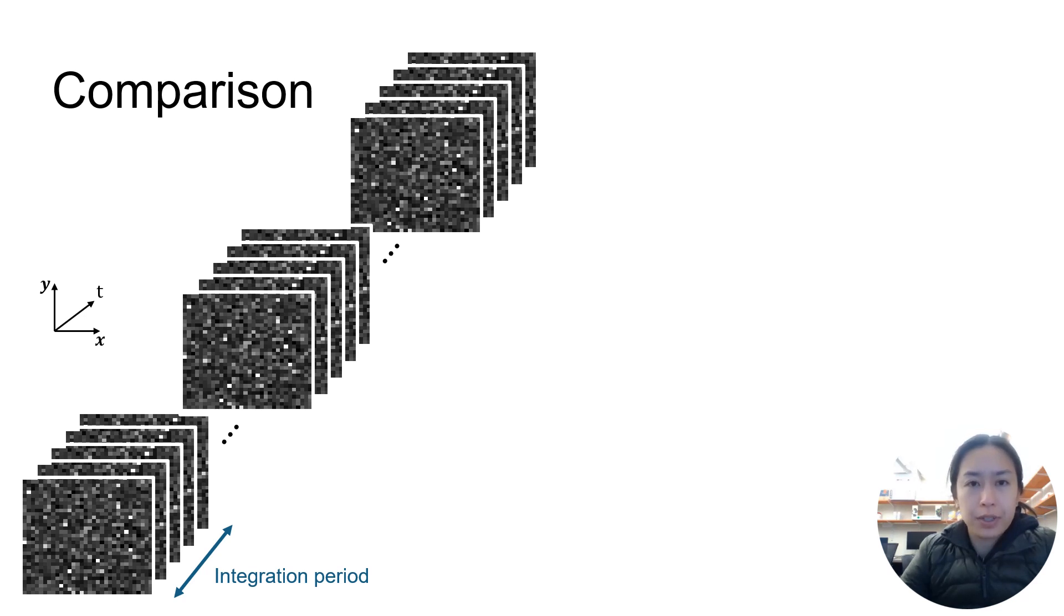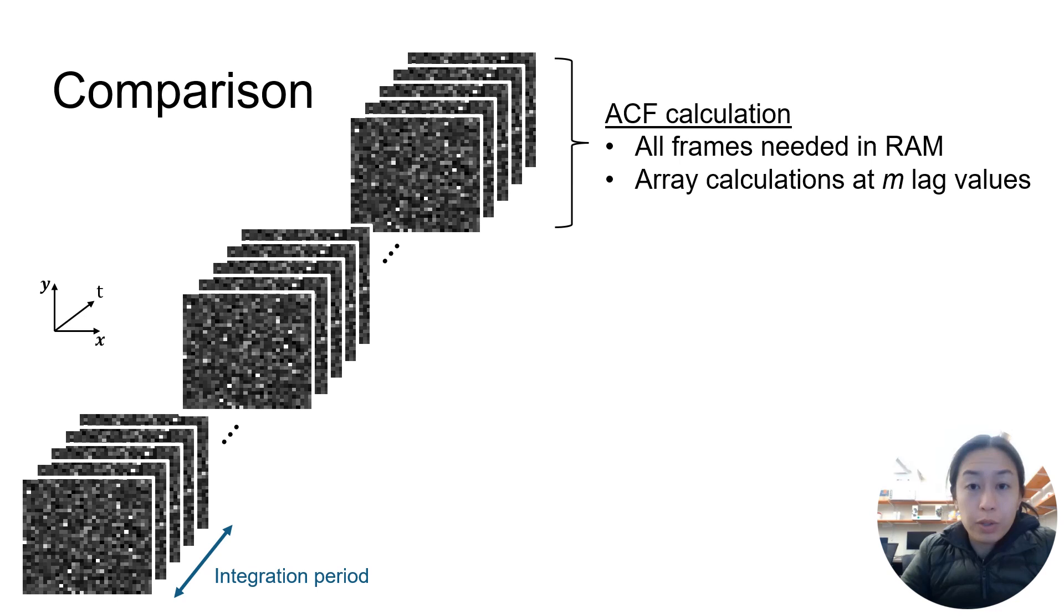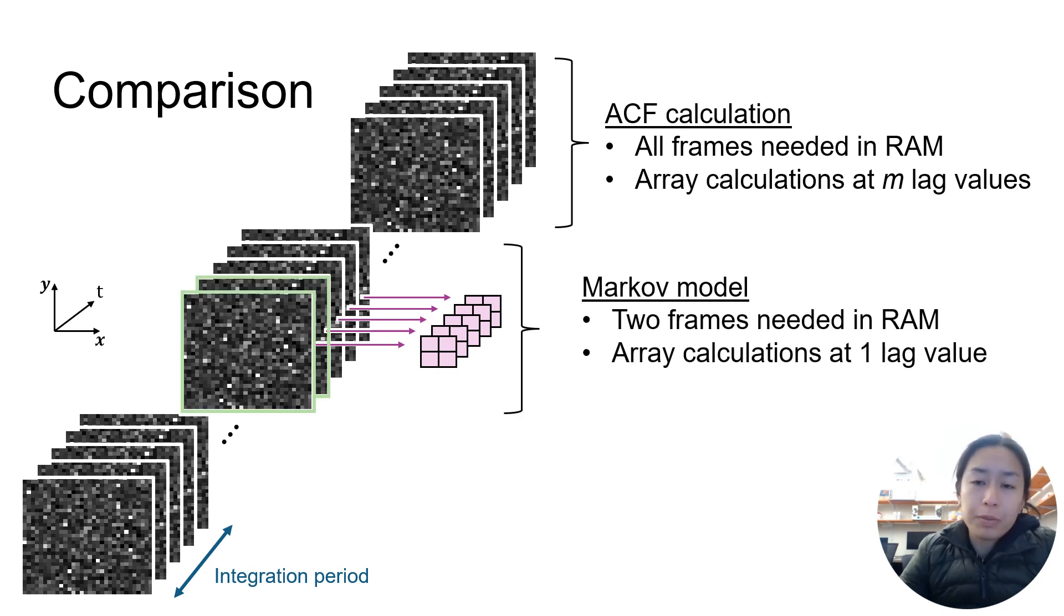And to just compare the methods for a given integration period, for autocorrelation calculation, we would need all the frames in memory and perform array calculations at however many lag values are desired. With this Markov model in theory, only two frames are needed in memory, although in practice these calculations are done in parallel, and we only need array calculations at one lag value.